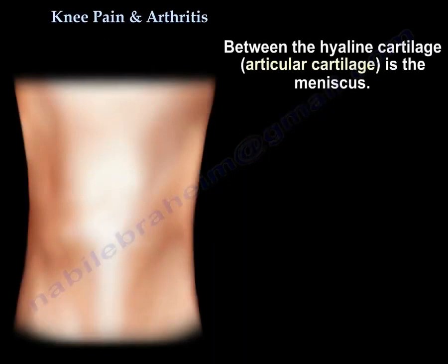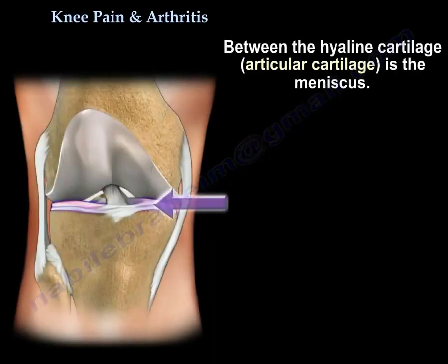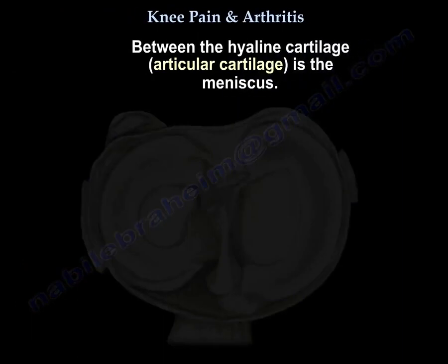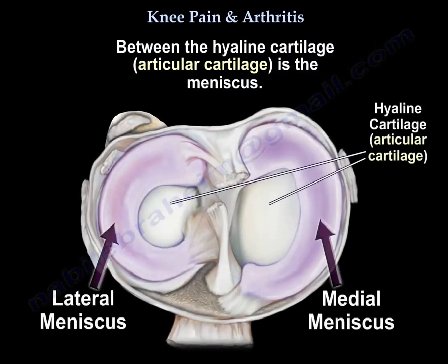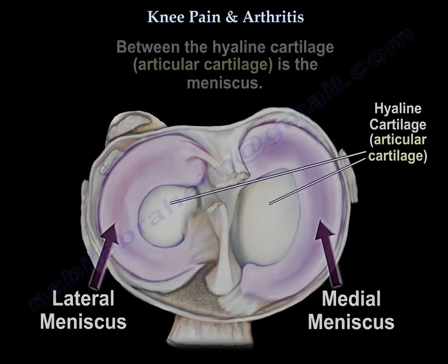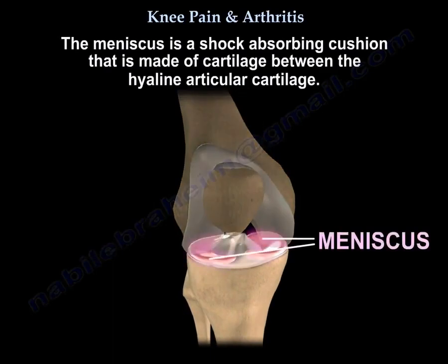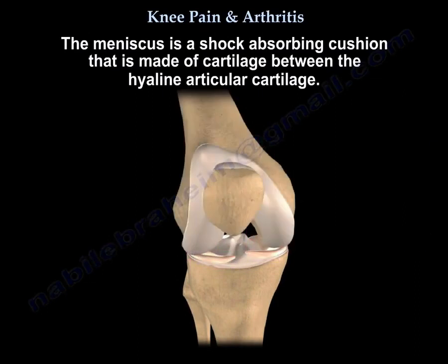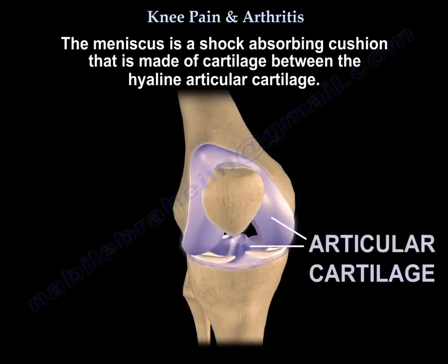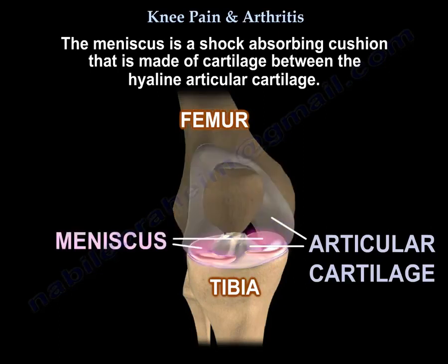Between the hyaline cartilage, which is articular cartilage, is the meniscus. The meniscus is a shock-absorbing cushion that is made of cartilage between the hyaline articular cartilage. Here you can see the hyaline articular cartilage of the femur and of the tibia, and the meniscus lies in between them.